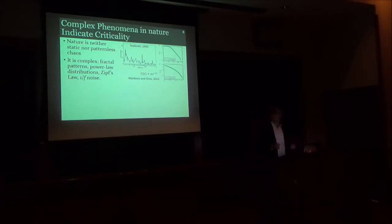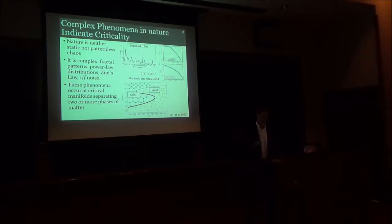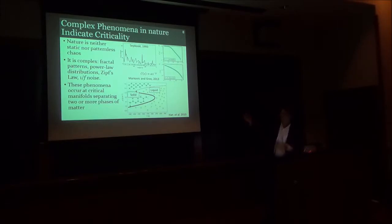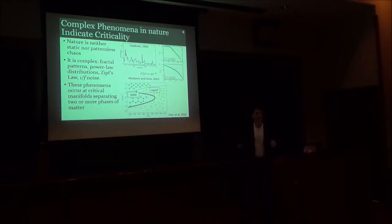These power laws are found all throughout nature in phenomena including earthquakes, where we have the Richter scale that tells us approximately that an earthquake that's ten times as powerful as another earthquake would occur ten times as rarely. We also see this in other phenomena such as the size of forest fires, solar flares, and many other systems. One interesting thing that we have learned from the realm of physics is that these types of complex phenomena tend to occur when a system is at criticality, and that means when it is at a critical manifold that separates two different phases of collective behavior.